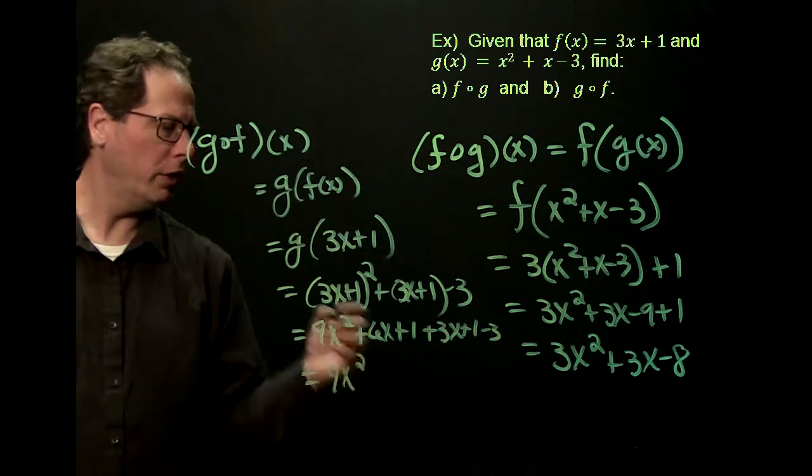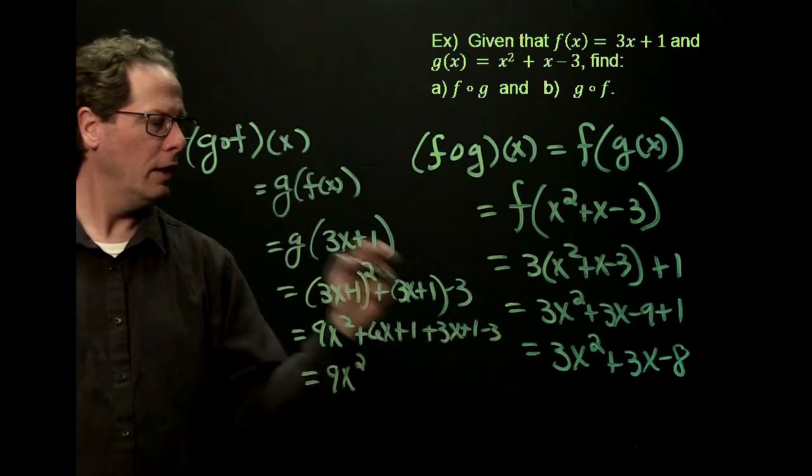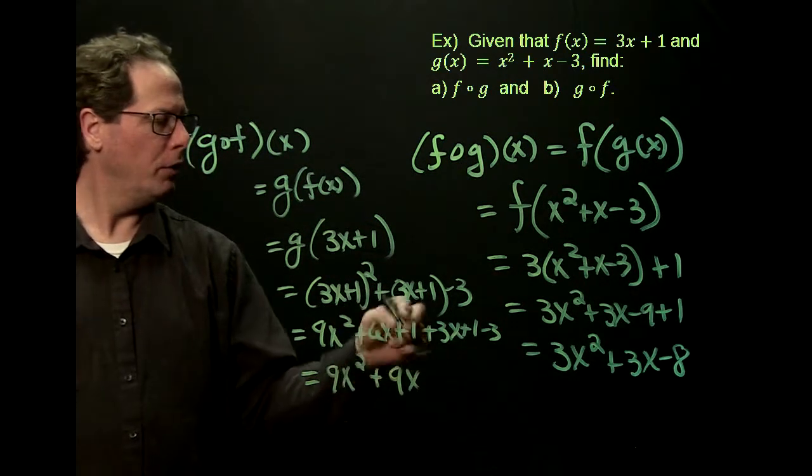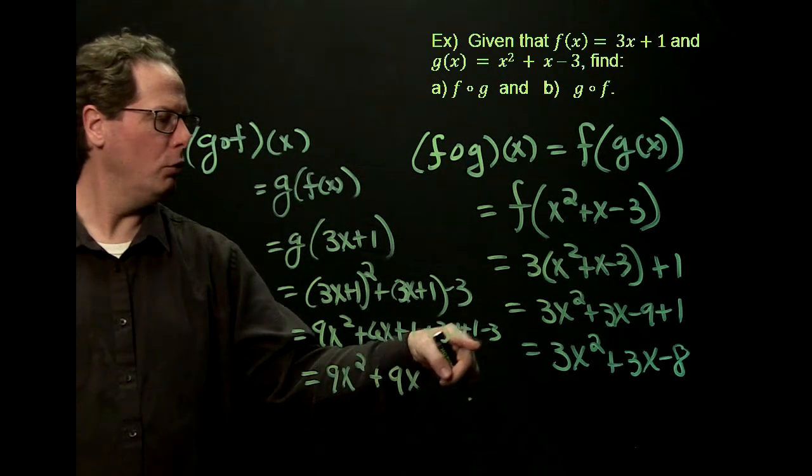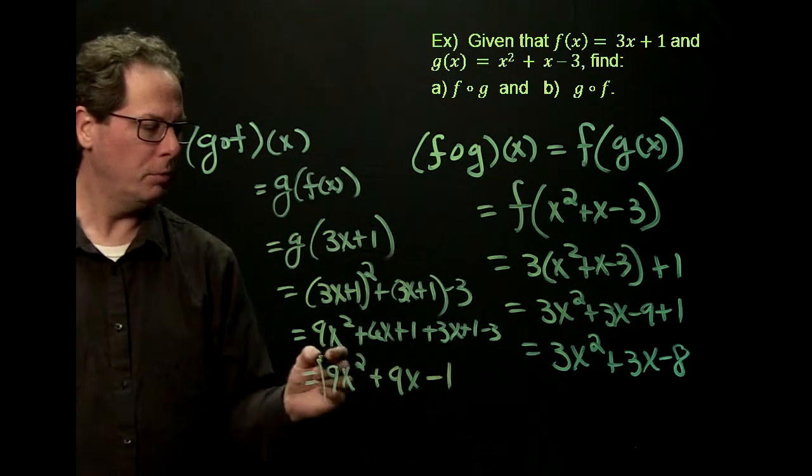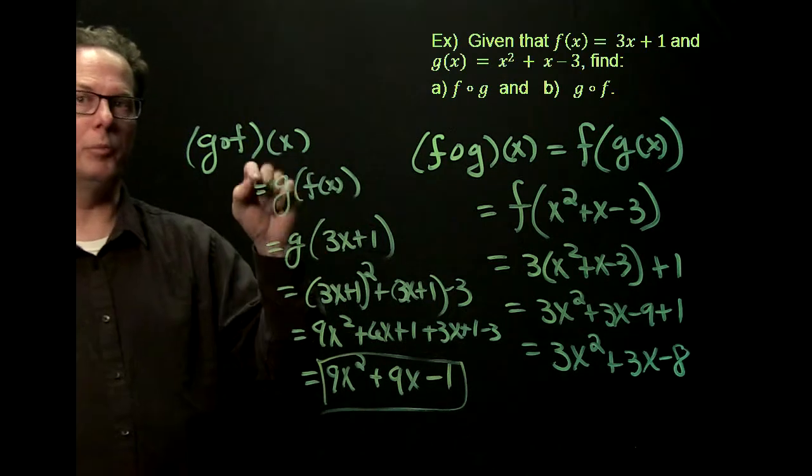So again we're just simplifying it here a little bit. 9x squared, there's no other x squared. You have a 6x, a 3x, that's 9x, and then you have a plus 1, plus 1 is 2 minus 3. 2 minus 3 is a negative 1.